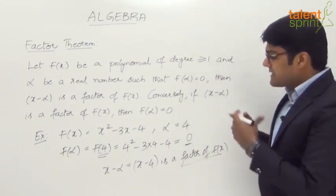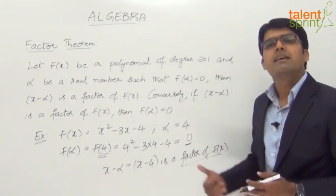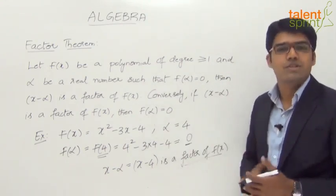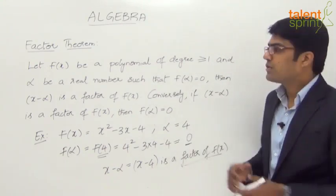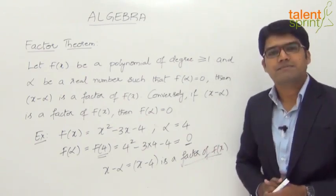Or, if it is given that x minus 4 is a factor of f of x, then f of 4 should be equal to 0 — the remainder has to be 0. This is the factor theorem.